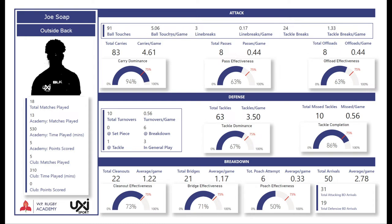Every stat has a per-game value. What that means is: when a player plays, say, 40 minutes and has 10 ball touches in those 40 minutes, we take those 10 ball touches, divide by the time he played, and multiply by 80 minutes. This gives us a comparative score so I can compare a player who played 40 minutes to one who played 80 minutes — a full 80-minute equivalent we call the per-game score. So if Joe Soap plays an 80-minute game, he'll most likely touch the ball 5.06 times.